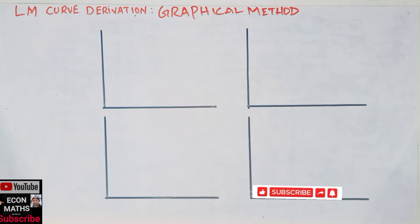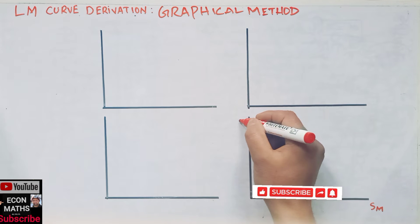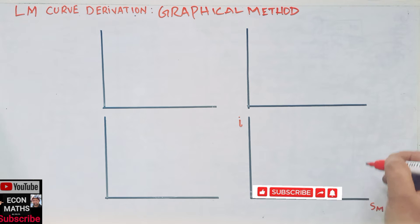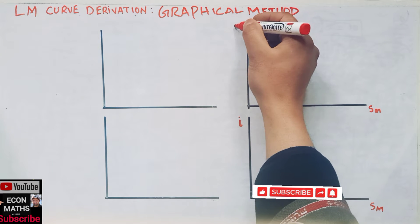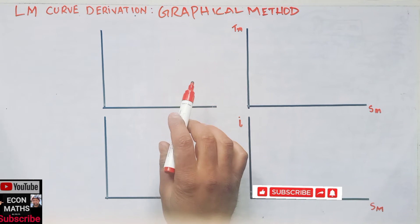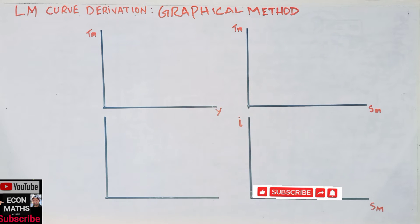Hi, this is Halal in the studio on the mathematical-economical series. We will derive the LM curve graphically, so you will get an idea of how to derive the LM curve. First of all, we take four graphs: graph one, two, three, and four. In the first graph, the horizontal axis has the speculative demand for money and the vertical axis has the rate of interest. In the second graph, the horizontal axis has speculative demand for money and the vertical axis has transactional demand for money. In the third graph, horizontal axis has transactional demand for money and the vertical axis has the level of income. In the last graph, we actually find the LM curve: horizontal axis is level of income, vertical axis is rate of interest.